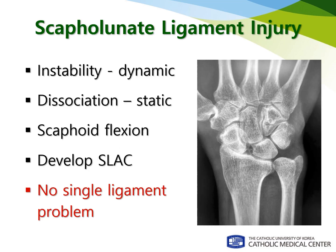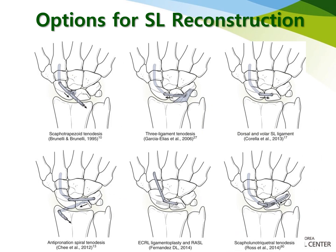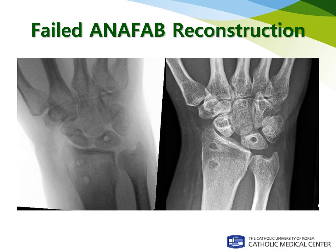The scapholunate ligament instability is not a single ligament problem but involves multiple ligaments that result in progressive arthritis of the wrist. Many surgical options have been introduced with mixed clinical results. Even with the newly developed anatomic procedures, sometimes they fail with no obvious reasons.